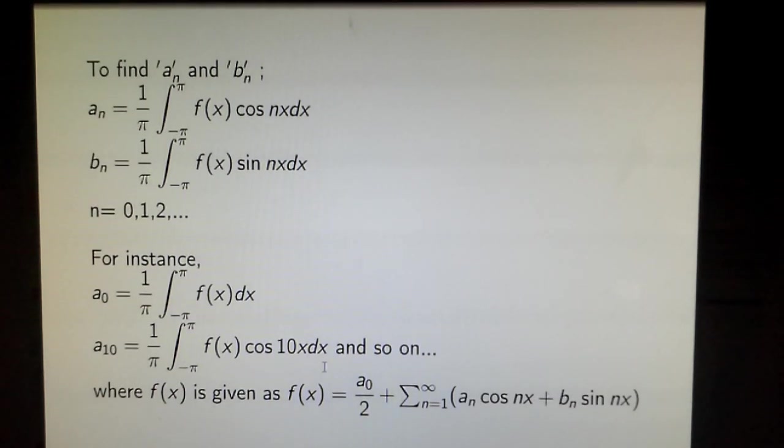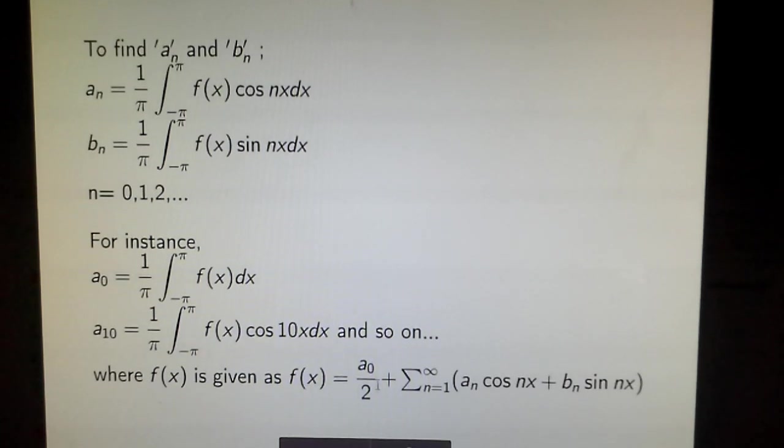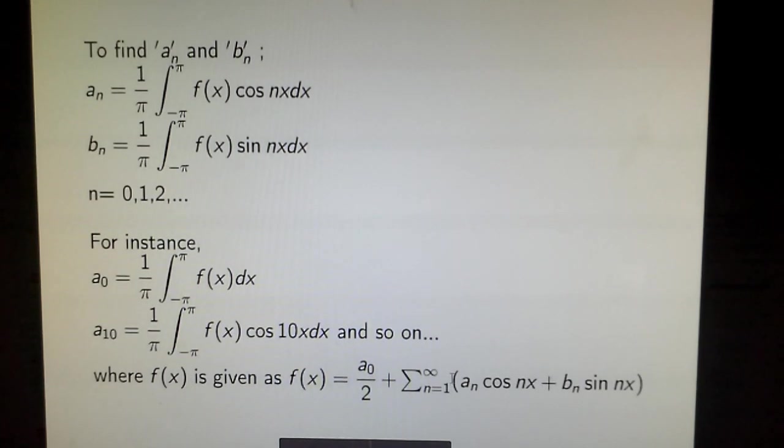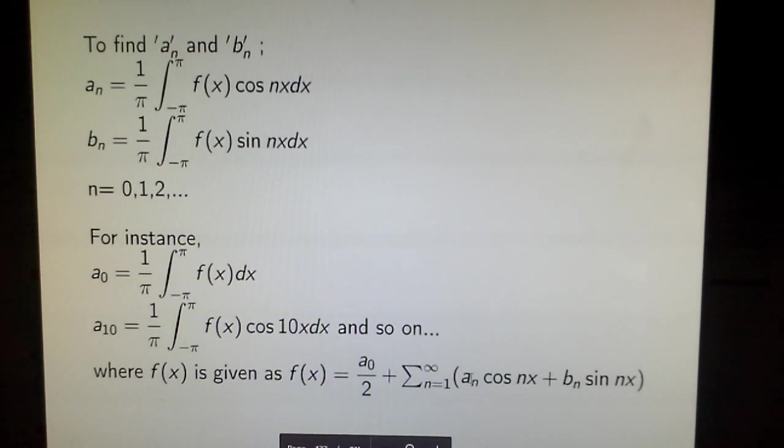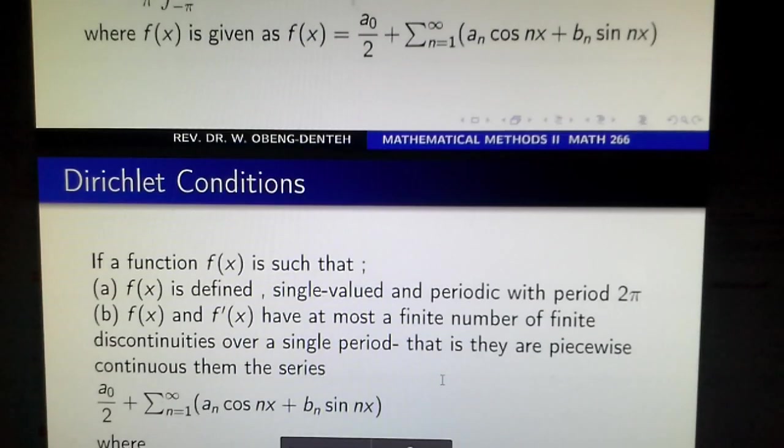Where f(x) is given as f(x) = a_0/2 + Σ(n=1 to ∞)[a_n cos(nx) + b_n sin(nx)].